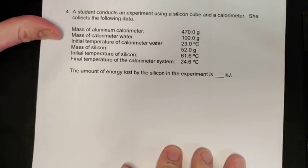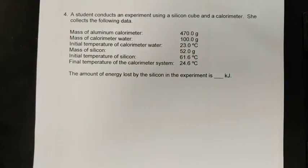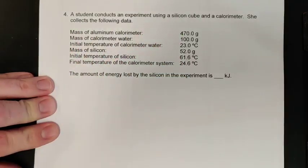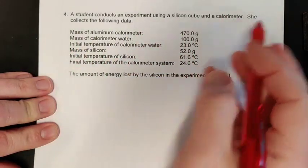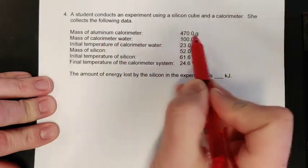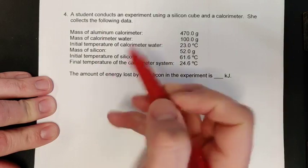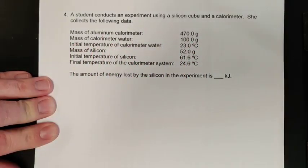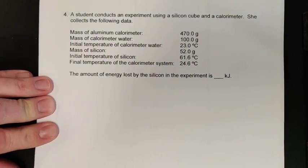Then we have one here that is a little bit more lab-like, so you got to decipher some information as we go through it. A student conducts an experiment using a silicon cube and a calorimeter. She collects the following data: her calorimeter is made out of aluminum and it weighs 470.0 grams. The mass of water that she has in it is 100 grams because she put 100 mL of water in there.